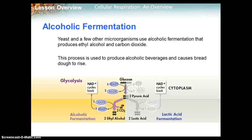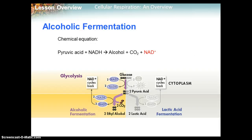One type of fermentation is alcoholic fermentation. Yeast and a few other microorganisms use alcoholic fermentation, which produces ethyl alcohol and carbon dioxide. This process is used to produce alcoholic beverages and causes bread dough to rise — the bubbles you see in bread dough are actually carbon dioxide. The chemical equation: pyruvic acid and NADH react to produce alcohol, CO2, and NAD+.